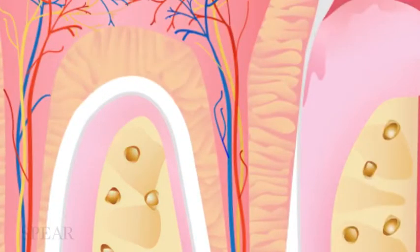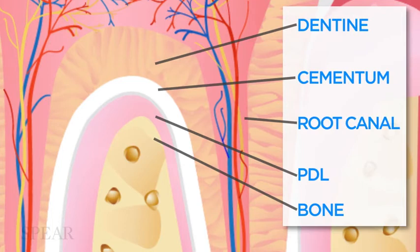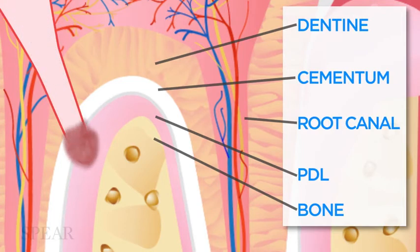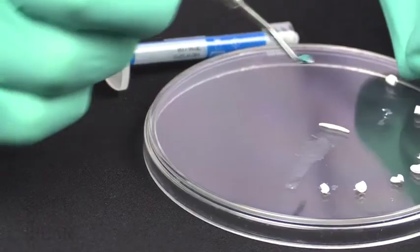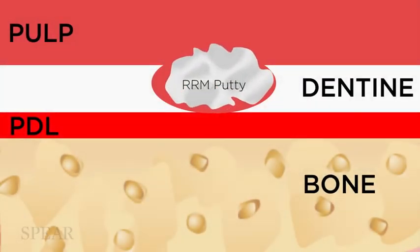The smaller the perforation, obviously the better the prognosis — hopefully just a pin perforation. As you can see in this diagram, you end up having a perforation that's in contact first with the PDL and then the bone underneath. You want to make sure you have control of the hemorrhage in the area — clean and disinfect the site, control the hemorrhage, and use hemostatic agents as needed. If you get there quickly enough and don't manipulate the area too much or pump hypochlorite in there — which would be the worst — then you have a good chance the area is dry enough to place a small ball of the putty material right inside the perforation.